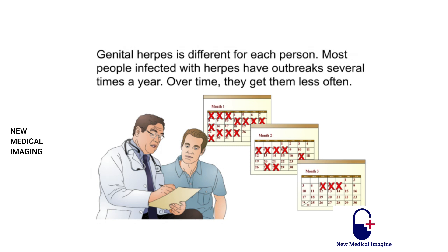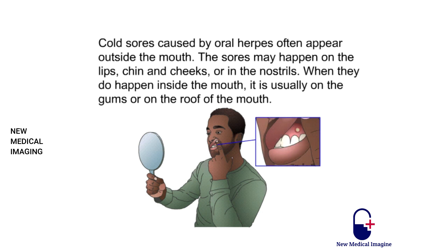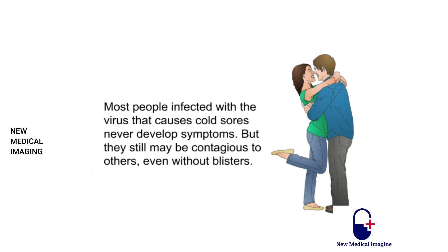Genital herpes is different for each person. Most people have outbreaks several times a year, but over time they get them less often. Cold sores caused by oral herpes often appear outside the mouth — on the lips, chin, cheeks, or in the nostrils. Inside the mouth, sores usually appear on the gums or roof of the mouth. Most people infected with the cold sore virus never develop symptoms, but they may still be contagious to others even without blisters.